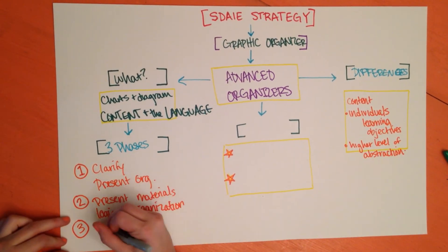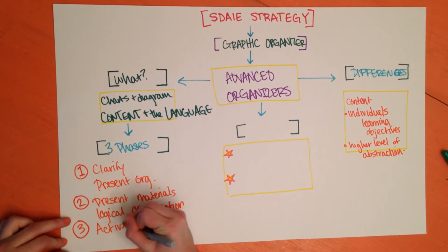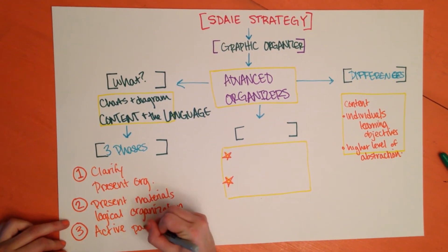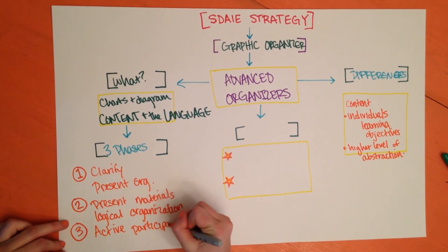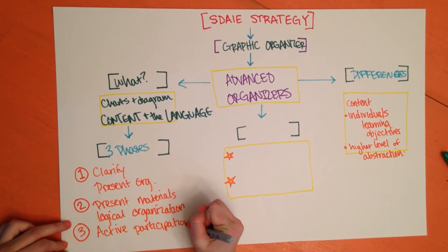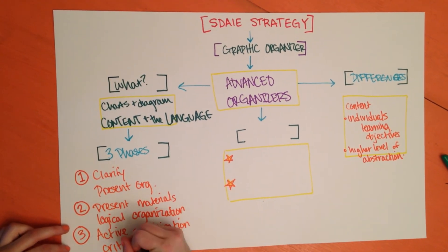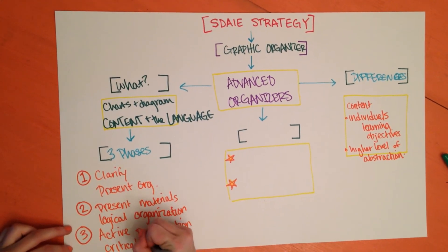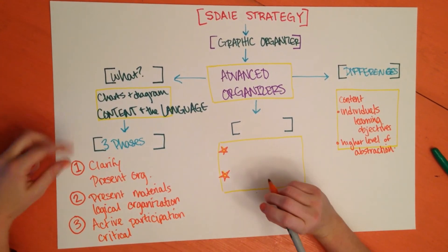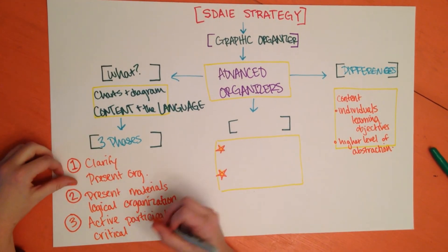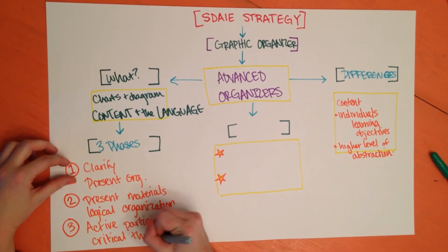The third phase is when the student takes an active role in participating in their own learning, takes ownership of their own learning, and uses their critical thinking to compare their organizer with the material that is being presented that day.